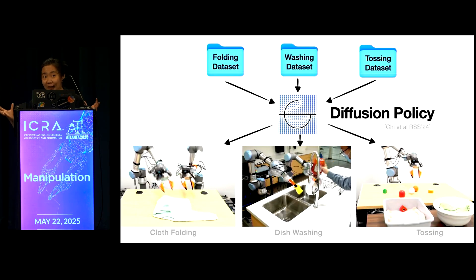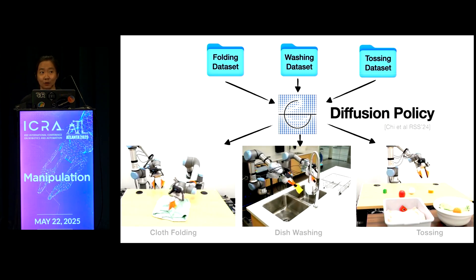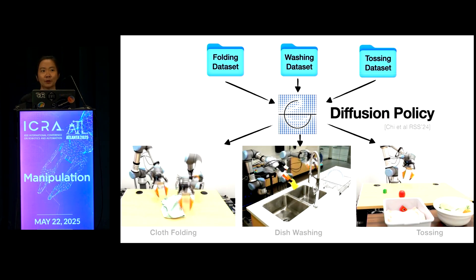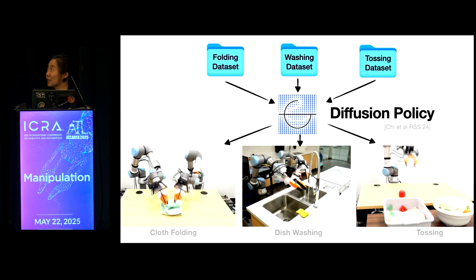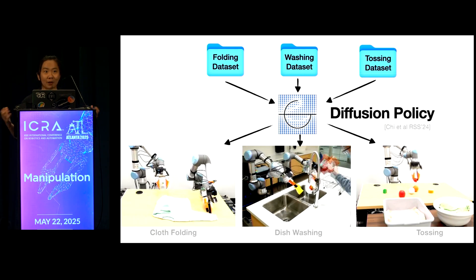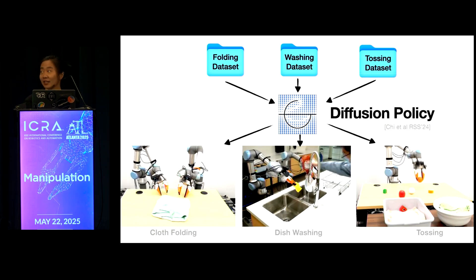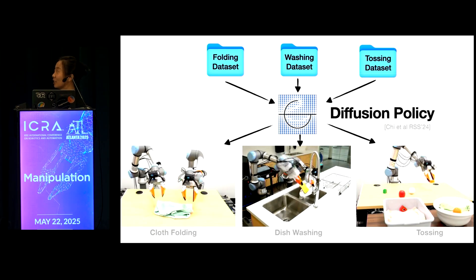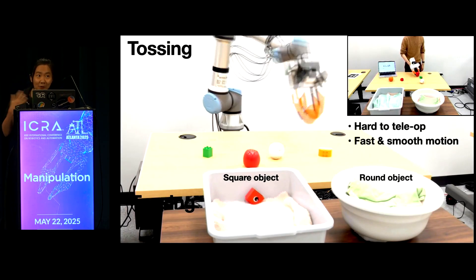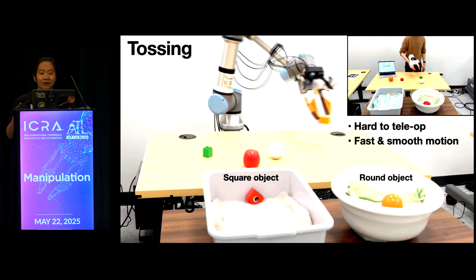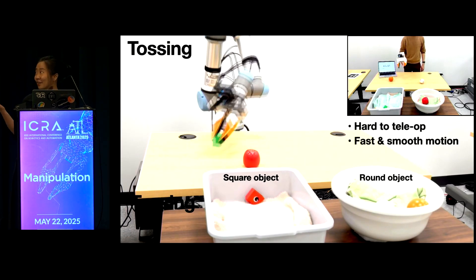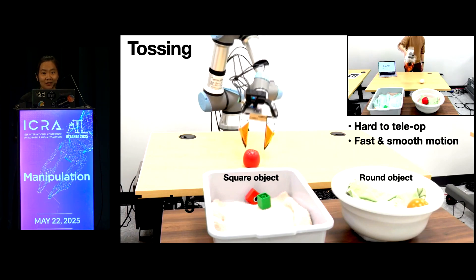Once you have data from many different tasks, you can train a robot policy that maps visual observations to robot actions to transfer those skills from human to robot. In much of our work we train diffusion policy, and with the same framework you can enable a wide range of applications — cloth folding, dish washing, or tossing. The tossing task in particular is very hard to teleoperate even with an expensive device because it requires fast, smooth motion, but now anyone with a UMI gripper can teach the robot this skill.